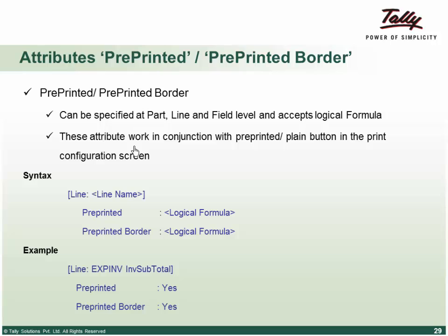Then we have the attribute pre-printed border, which takes a logical parameter yes or no. This is a general requirement for pre-printed invoices — when viewing, you may require borders, but if you have a pre-printed invoice, you might not require those borders. When you say pre-printed yes, it means the border exists and the borders provided for your definitions will be ignored. This can be specified wherever borders are allowed: part, line, and field.